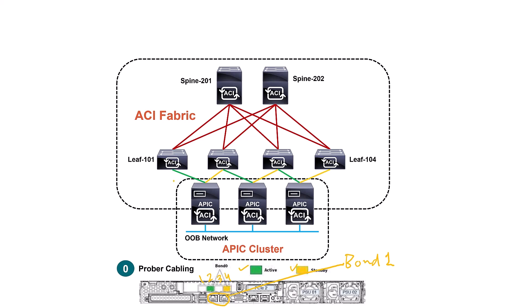The green and yellow cables from bond zero go toward the leaf switches. Step zero was just the cabling. Step one is the APIC initial setup — also your responsibility. This is a dialogue you answer for each of the three APICs, and it takes less than five minutes. Configure the APIC with a management IP address and answer the prompts — that's it. The rest of the steps after that are all automatic.